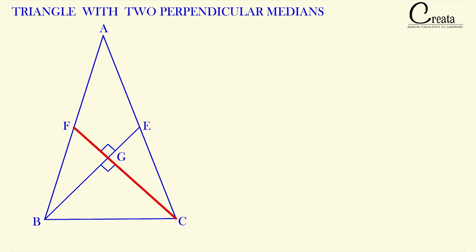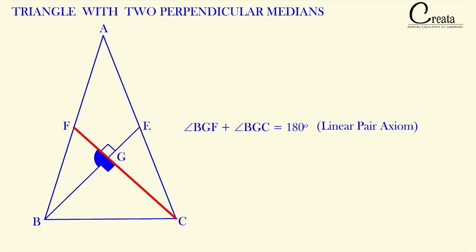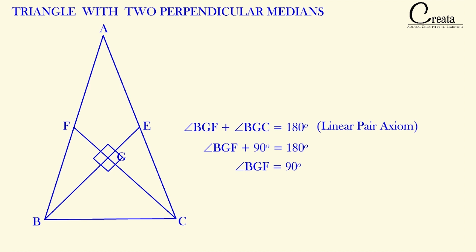Further, CF is a straight line, so the sum of both angles will be equal to 180 degrees by the linear pair axiom. So angle BGF is also equal to 90 degrees. Similarly, angle CGE will also be equal to 90 degrees. So all four angles at G are 90 degrees.